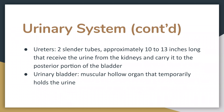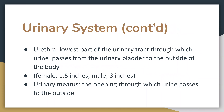The ureters — there are two of those — are slender tubes approximately 10 to 13 inches long. They receive the urine from the kidneys and carry it to the posterior portion of the bladder. The urinary bladder is a muscular hollow organ that temporarily holds the urine. The urethra is the lowest part of the urinary tract, through which urine passes from the urinary bladder to the outside of the body.